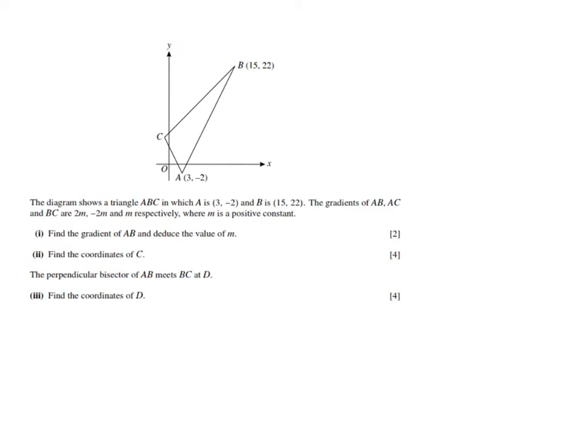I'll do it here in the corner because I don't have a lot of space. Finding the gradient, you can say something like the difference in the Y direction over the difference in the X direction. And the difference in the Y direction, 22 minus minus 2. So be careful with those signs. 22 minus minus 2. Difference is minus and the minus of the 2 over there. Over 15 take away 3. And as I can see, AB will have a positive gradient.